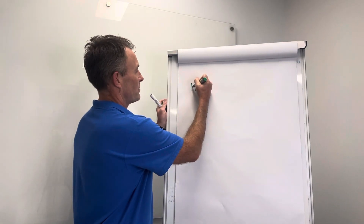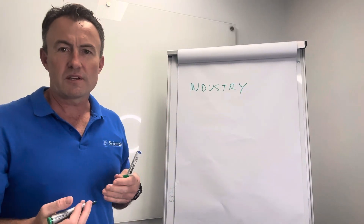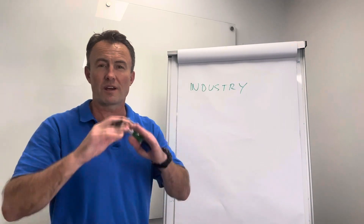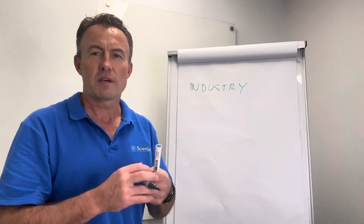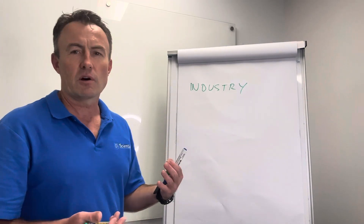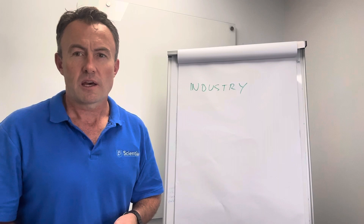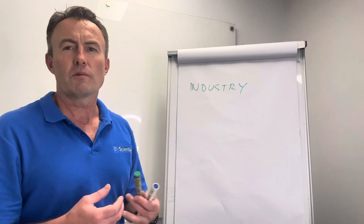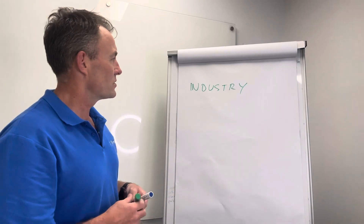So you've got one big group of funds called industry super funds. These typically started off so that you could only get into them if you were a teacher, a healthcare worker, a builder, or whatever. When super started and became compulsory, it began with government employees and then big industries offered super as well. These industry super funds started off as member-based and now they're massive — millions of people in them. They advertise a lot and they do a pretty good job. They've got relatively low costs, but you still need to check what you're invested in. They're very simple and they do a certain job for you.